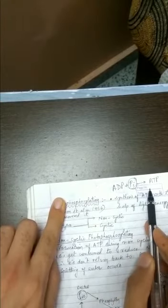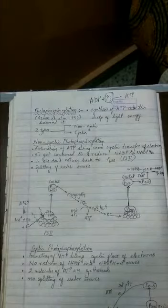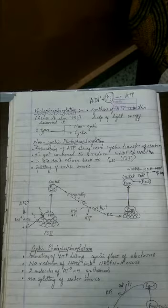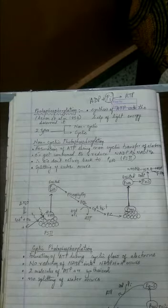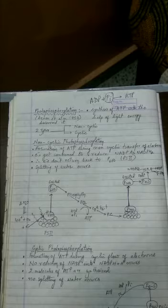So ADP reacts with one inorganic phosphate to give rise to ATP, that is the energy currency. This attachment of inorganic phosphate to any molecule is called as phosphorylation. And because we are talking about photosynthesis and the light driven reactions, that's why it is called as photophosphorylation. This was first explained and discovered by Arnon and his co-workers in the year 1954.